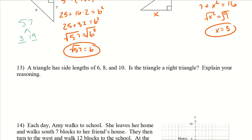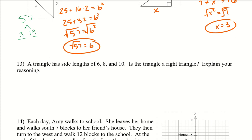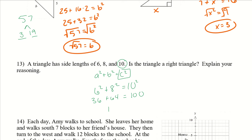Let's look at number 13. A triangle has side lengths of 6, 8, and 10. Is the triangle a right triangle? We'll still use a squared plus b squared equals c squared. The longest side is the hypotenuse, so we do 6 squared plus 8 squared equals 10 squared. If this is a true statement, it's a right triangle. We get 36 plus 64 equals 100, and 36 plus 64 does equal 100. So yes, this is a right triangle.